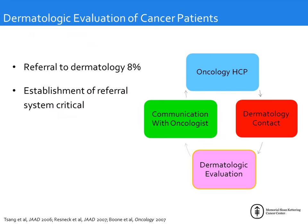Before going into the basics of skin as an organ, I want to emphasize why it is important for you as oncologists or oncology nurses to know about skin in your patients. Only about 8% of cancer patients ever get referred to a dermatologist. We have established a system at our institution in which the oncology provider refers to us, we see patients the same day, and in the majority of cases the attribution of a patient's dermatologic condition differs from what was established by the oncologist.